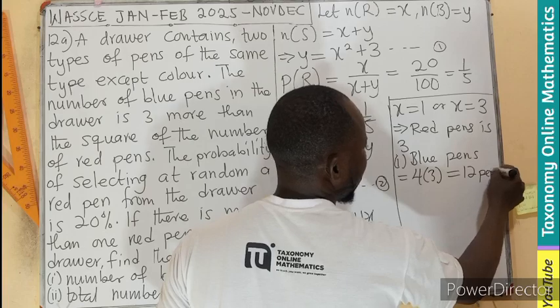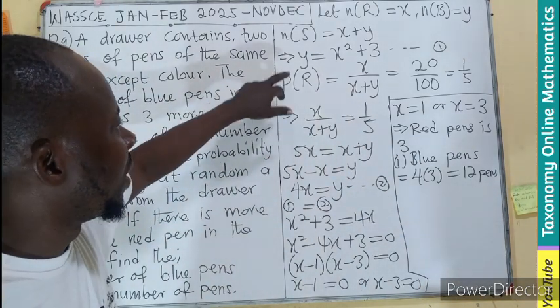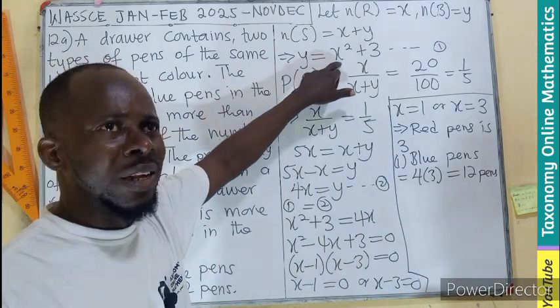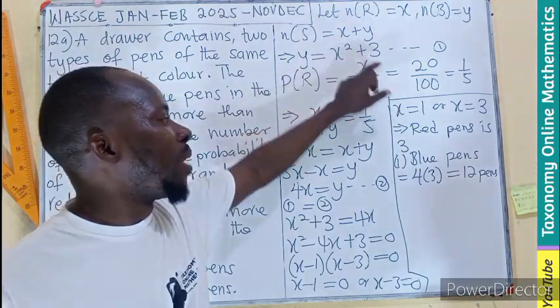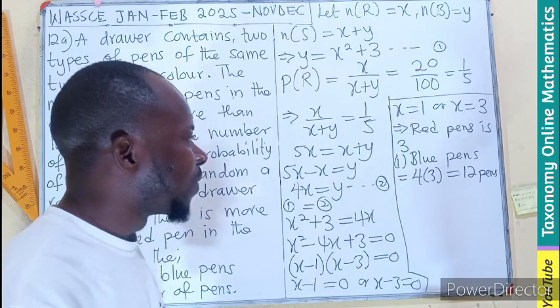We can also use the first equation here. Y equals to, let's put a 3 here, which is going to be 3 squared. 9. 9 plus 3 will also be 12 pens.